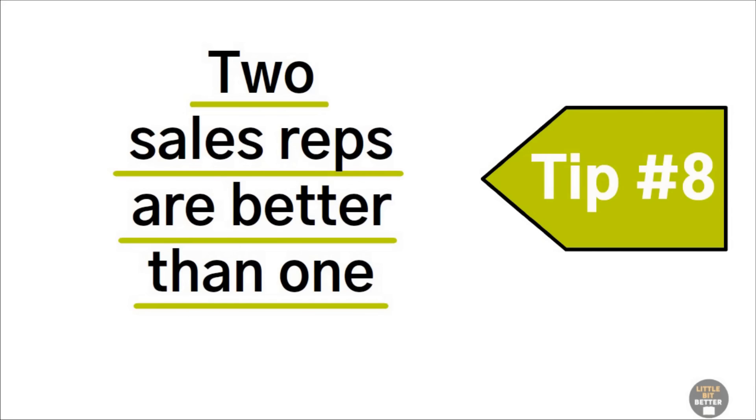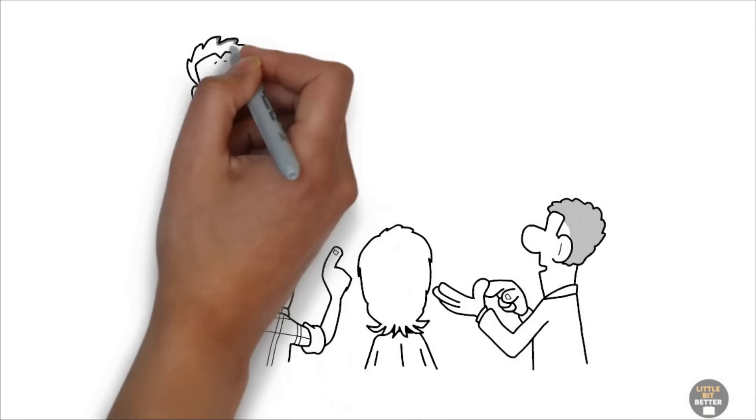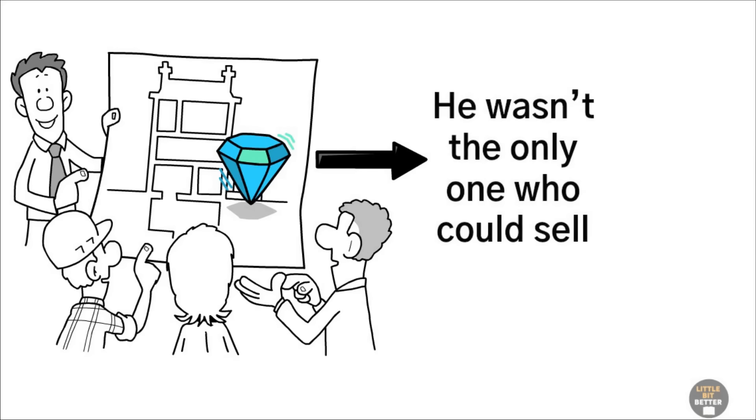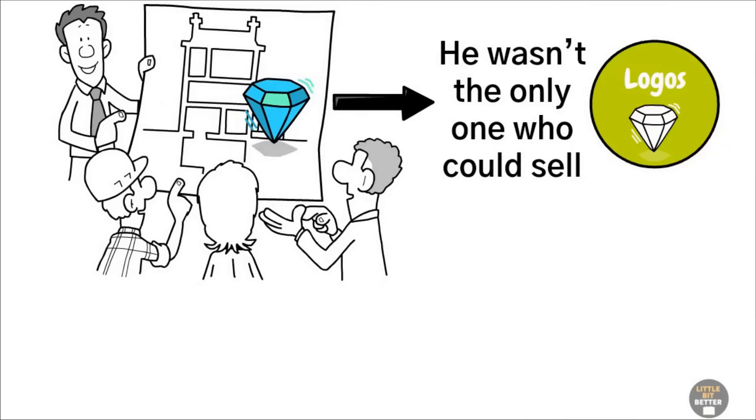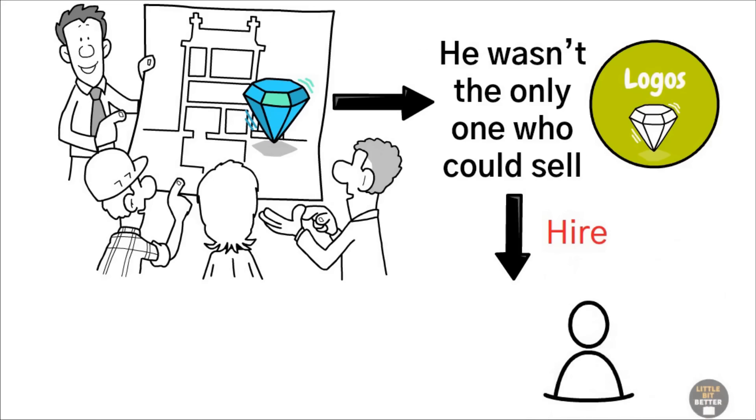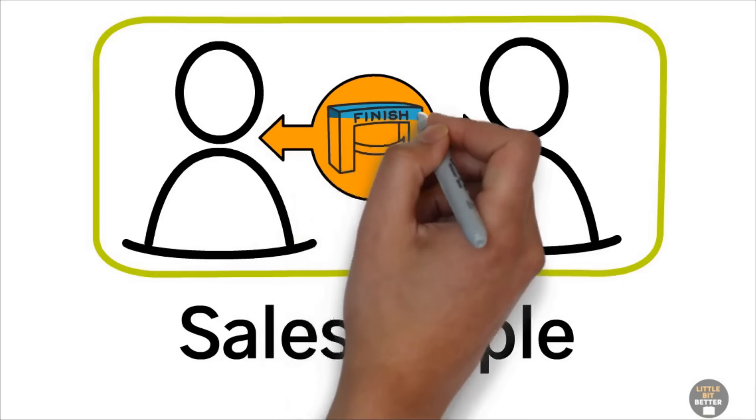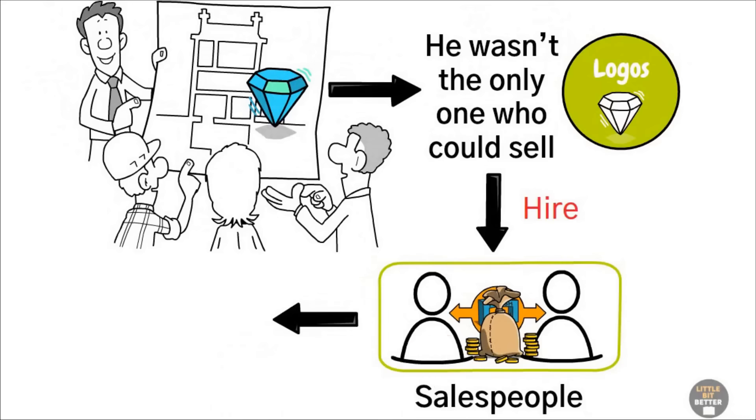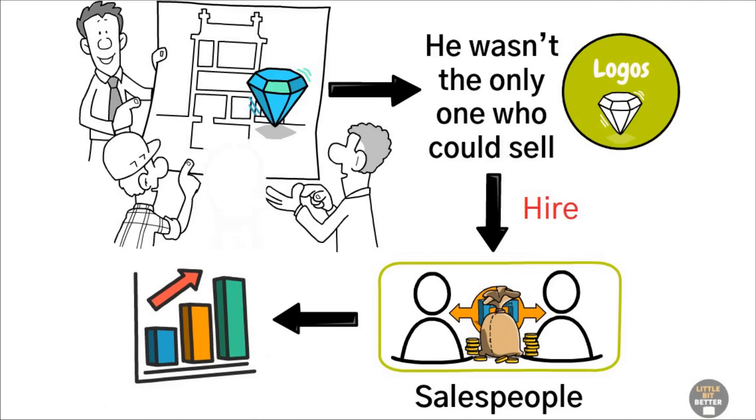Ted's tip number eight, two sales reps are better than one. Ted explained that if Alex wanted to show that he had built a valuable company, he would need to show that he wasn't the only one who could sell logos. Ted told Alex that he needed to hire two sales reps to start. He explained that salespeople are competitive and will compete with each other, and this meant more money for them and for Alex. Plus, two sales reps would signal that you have a scalable business model, not just one good sales rep.